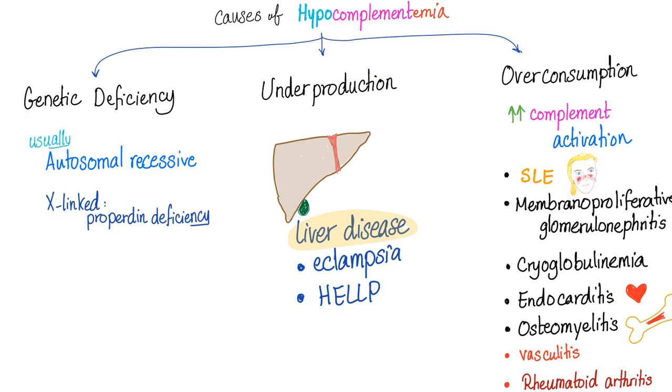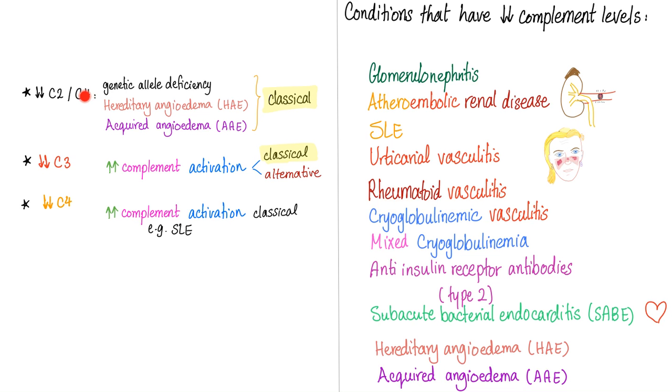We have discussed the causes of hypocomplementemia in the previous video. Just don't forget that lupus is here. Decreased C2 and C4 is seen in these genetic problems. Decreased C3 is due to increased complement activation, could be classical or alternative. Decreased C4 can be seen in classical complement activation, such as lupus. Conditions that have hypocomplementemia are here, and of course, they include lupus.